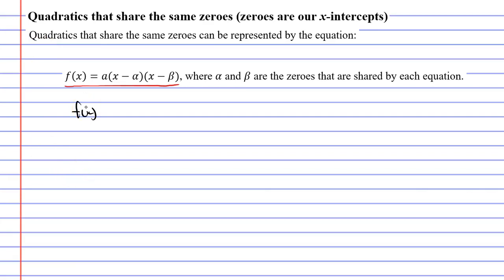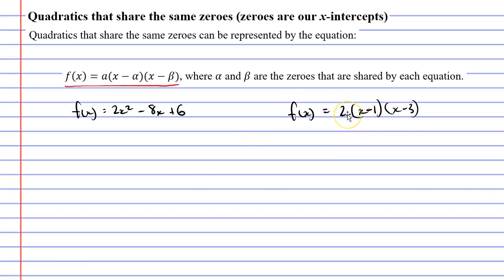Let's take the function f(x) = 2x² − 8x + 6. If I wanted to graph this function, at some point I need to find my x-intercepts, or my zeros, and to do that I need to factorize the function. In factorized form it looks like this: f(x) = 2(x − 1)(x − 3). When we find the x-intercepts, the 2 on the left is irrelevant. Looking inside the brackets, I can see x-intercepts at 1 and 3, because 1 − 1 = 0 and 3 − 3 = 0 — hence why we call these zeros.